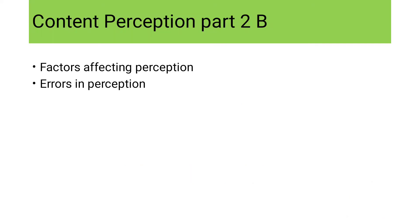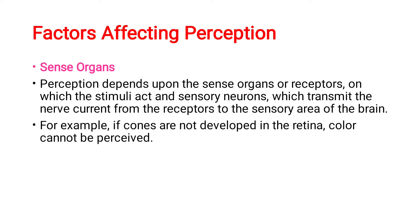Let's move on to the contents of this part 2B video. We are going to discuss factors affecting perception as well as errors in perception. Perception is what you are interpreting the sensation — you are converting the sensation into a meaningful thing, that is called perception, which I have discussed in detail in my last video.